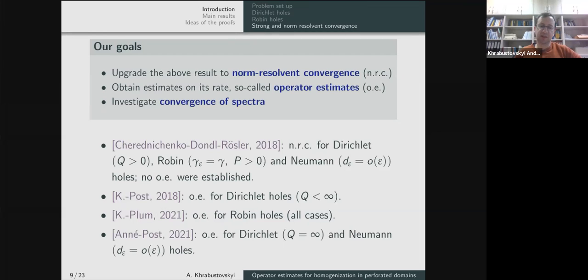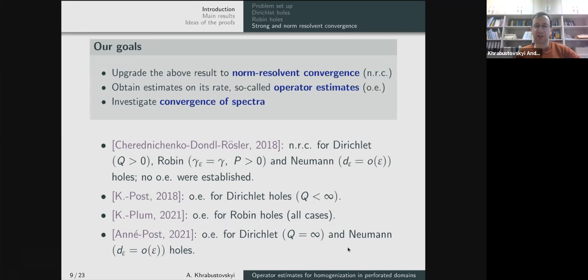Let me mention some other closely related papers. A recent paper by Khrabustov and Olaf Post, published in the Journal of Spectral Theory, proves operator estimates for Dirichlet holes in the remaining case q = infinity (not considered before) and for small Neumann holes, done in quite general setting on Riemannian manifolds — omega is not a domain but a Riemannian manifold, and the operator is the Laplace-Beltrami operator.